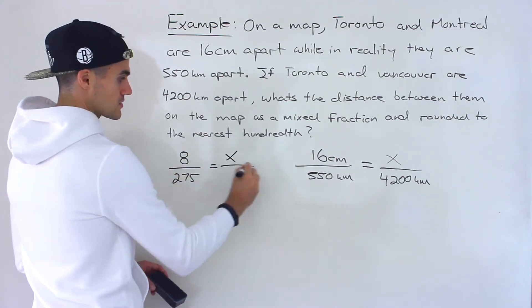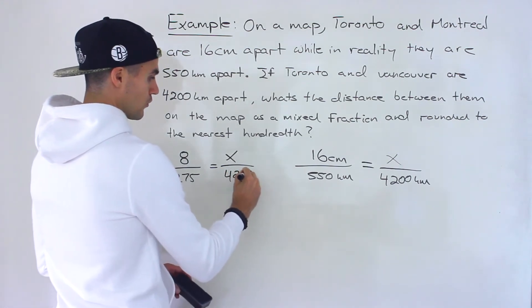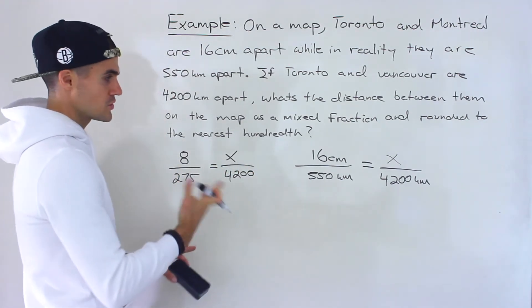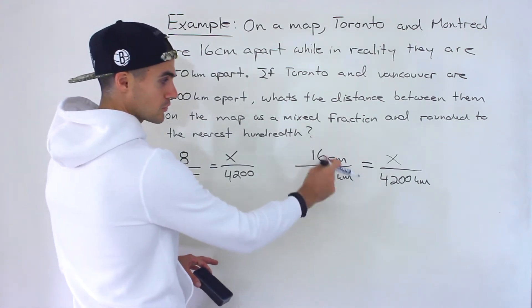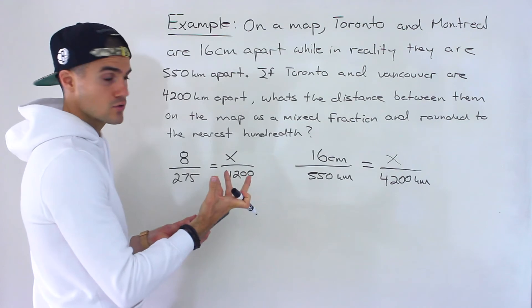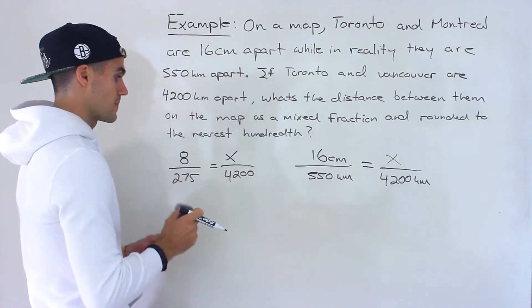Then we'll have x over 4,200. Just to work with smaller numbers you don't necessarily have to do that but if you do get a fraction like this before cross multiplying you could check whether you can simplify it further.